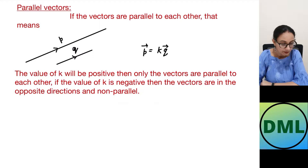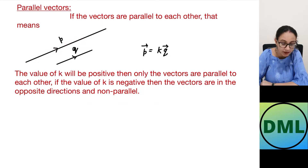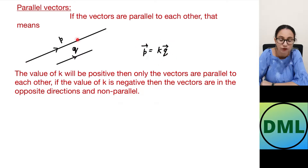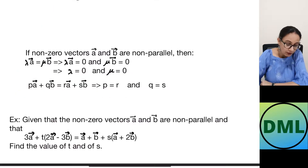Hello everyone, in today's video we are going to solve questions based on parallel vectors. If vectors are parallel to each other, suppose we have vector p and vector q both in the same direction. Parallel vectors don't mean the lengths are the same — the lengths may differ. We can write vector p as some constant k multiplied by vector q. The value of k must be positive for the vectors to be parallel; if k is negative, the vectors are in opposite directions.